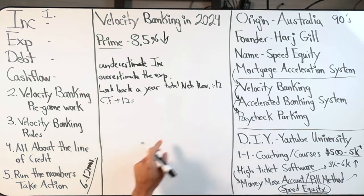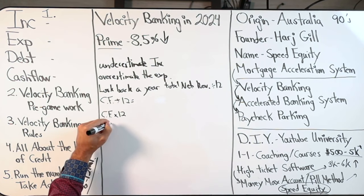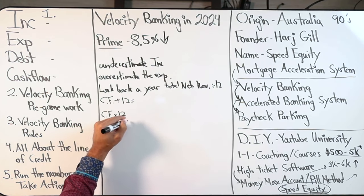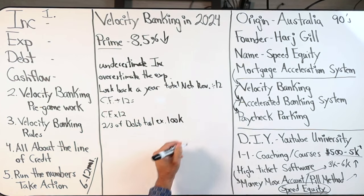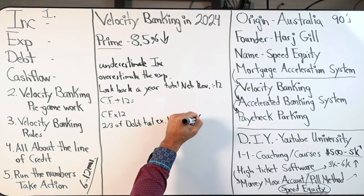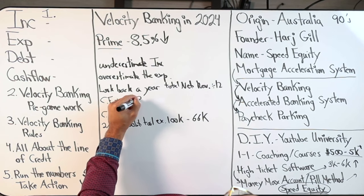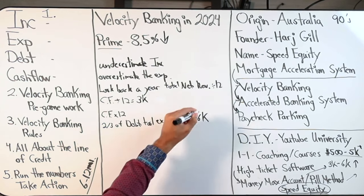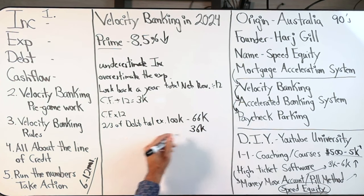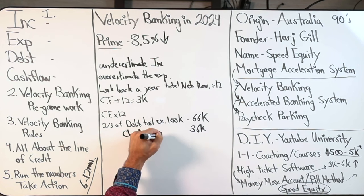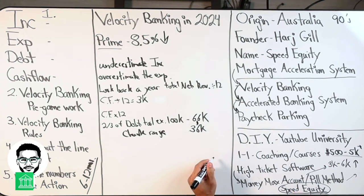I'll throw it in here quickly. We do cash flow times 12, and we do two-thirds of the debt tool. For example, say you've got a $100,000 line of credit — we really shouldn't borrow more than $66,000. Let's say your cash flow in a month is $3,000. Three times 12 is $36,000. So now we have what's called our chunk range — you would chunk anywhere between $36,000 and $66,000.